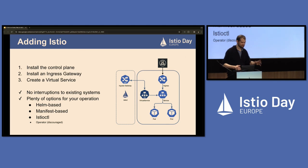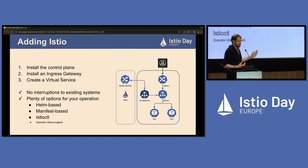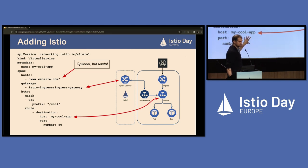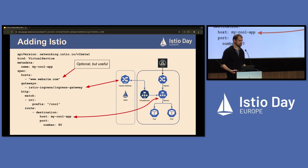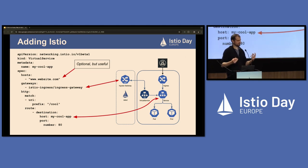Step three is adding the virtual service. When you do the installation you get Istio and your ingress gateway, but nothing is happening yet. The virtual service is a resource specific to Istio. The manifest is essentially small: it references your existing Kubernetes service — we've named it 'my cool app' — and it references the ingress gateway. The virtual service references both your existing Kubernetes service and your ingress gateway, and that's all it takes to glue them together. That's the first step into adding Istio without any impact.